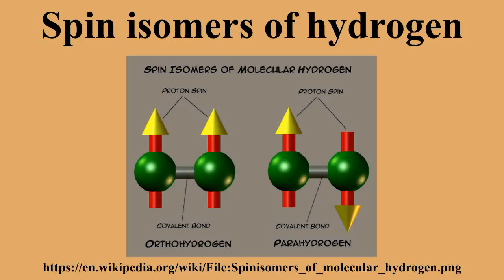When an excess of parahydrogen is used during hydrogenation reactions, the resultant product exhibits hyperpolarized signals in proton NMR spectra, an effect termed PHIP or, equivalently, Pasadena — a phenomenon that has been used to study the mechanism of hydrogenation reactions.